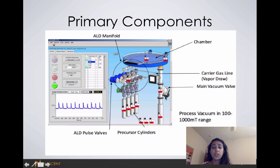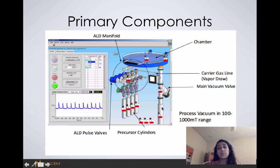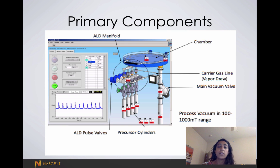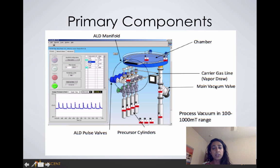This is our main vacuum valve. All of these reactions must take place in very pristine environments, and by operating at very low pressures with the help of vacuums, we're able to create this pristine environment.